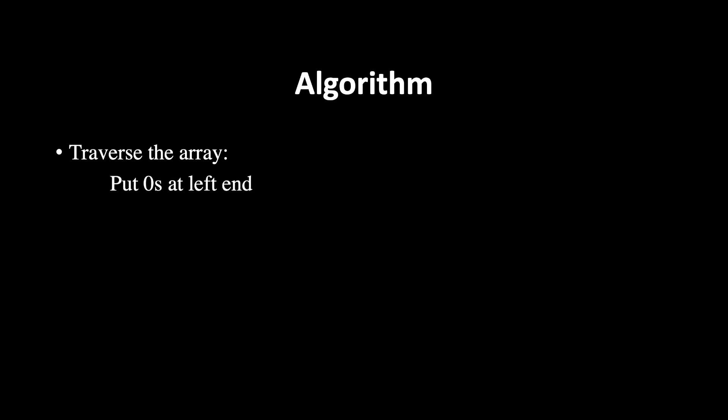Hi everyone, welcome to the 10th video in the series of algorithm animations. If you haven't checked my playlist or you're coming to this video for the first time, go check my playlist — I've covered all the important algorithms with animations. I'm Shreyansh Jain. Let's see the algorithm first to get a quick overview: we'll traverse the array, putting zeros to the left and twos to the right, so ones will automatically remain in the middle. Let's see the animation.